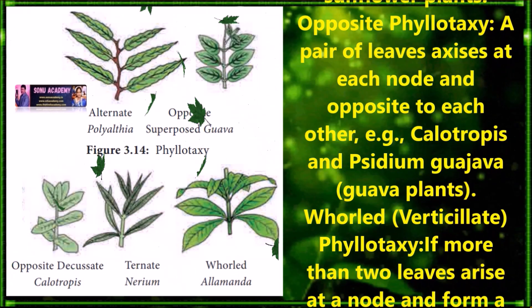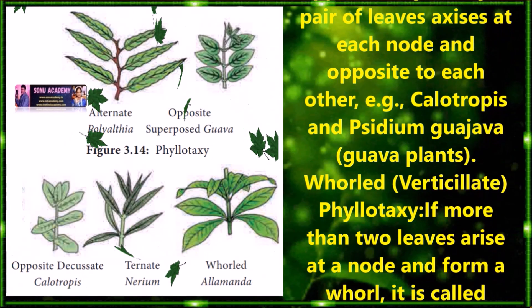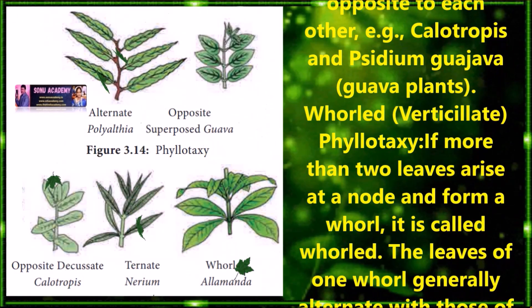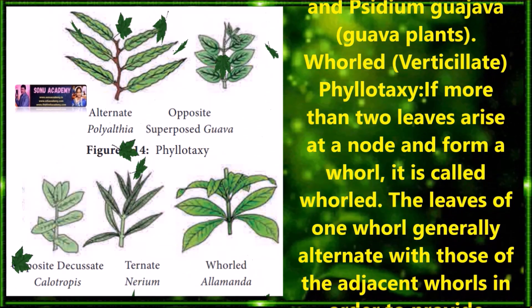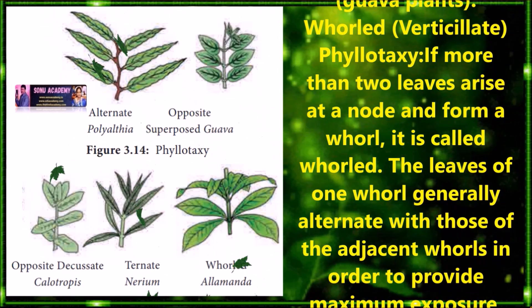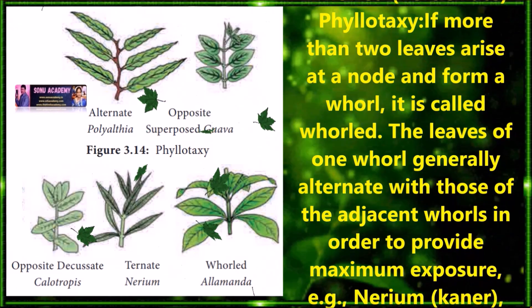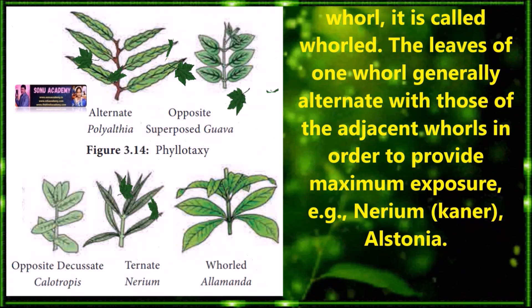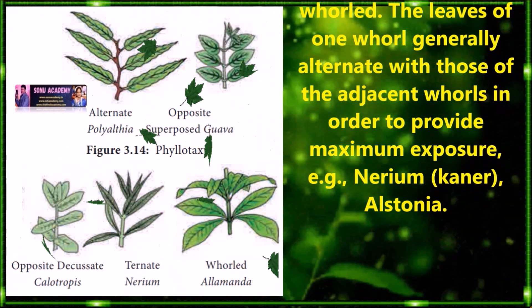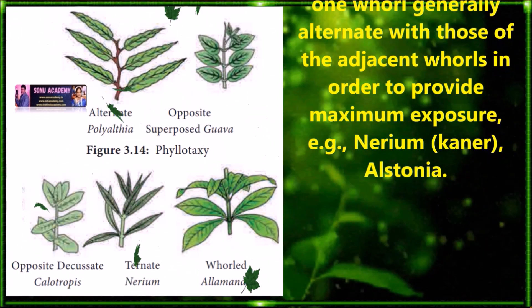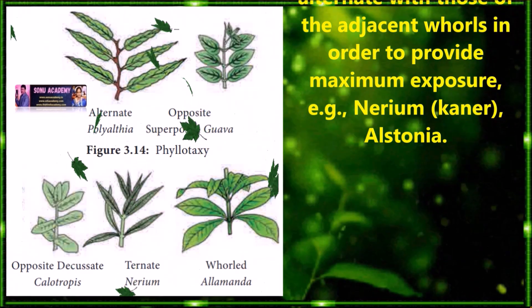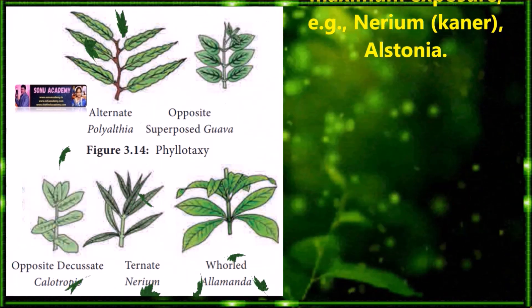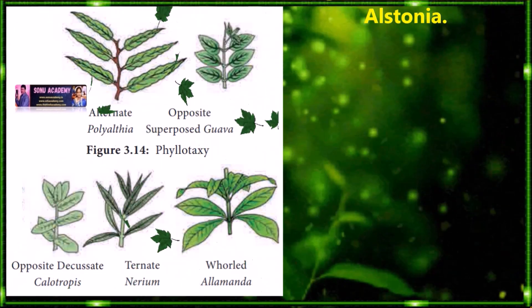Opposite phyllotaxi: a pair of leaves arises at each node and are opposite to each other. Examples are Psidium guajava (guava) plants, etc. Whorled or verticillate phyllotaxi: if more than two leaves arise at a node and form a whorl, it is called whorled. These leaves of one whorl generally alternate with those of adjacent whorls in order to provide maximum exposure. Examples are Alstonia, Nerium, etc.